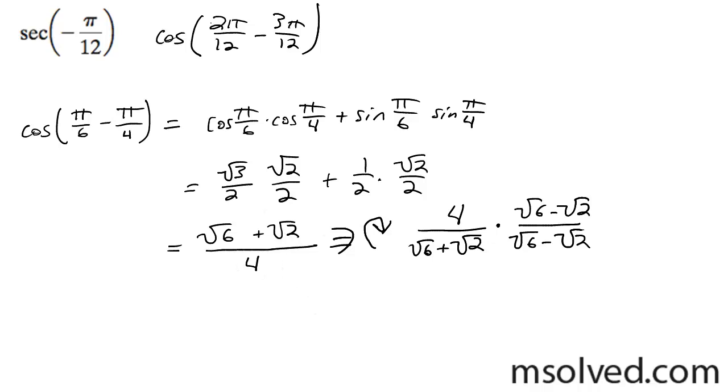So what we're going to get here is on the bottom, the middle terms cancel out, and you end up with 6 minus 2. And on the top, you get 4 times √6 minus √2.